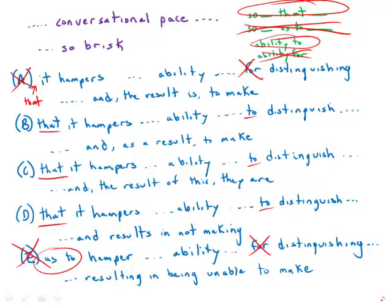That leaves us with B, C, and D. Notice that we have two abilities that we're talking about for the kids, and these verbs have to be in parallel. So distinguishing and to make, that's not in parallel. That's actually strike three against option A. To distinguish, to make, that's a proper parallel.